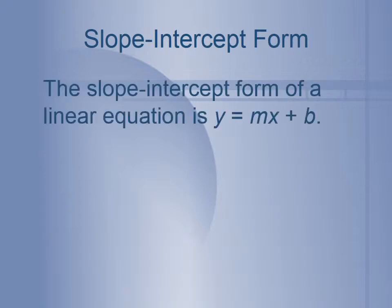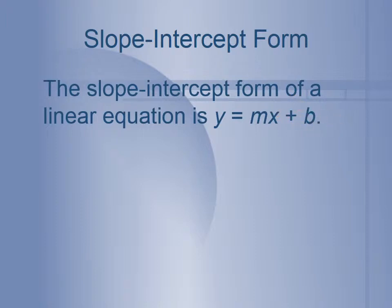This is the slope-intercept form of a linear equation: y equals mx plus b. So y is going to be by itself on the left-hand side. Then the variable x — there's just going to be one term with x in it, and x can have a coefficient or a number in front of it called m. And there's a plus b, a constant, by itself with no variable, so b will be some number.